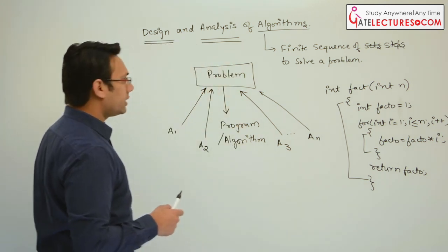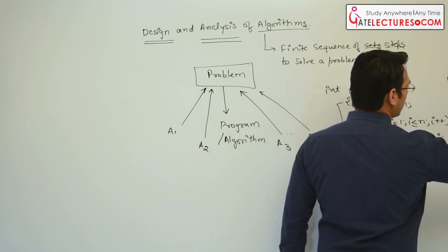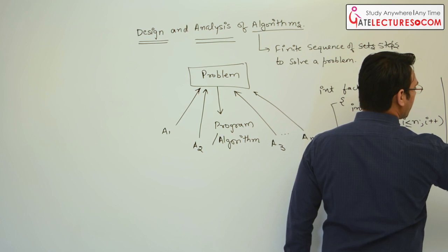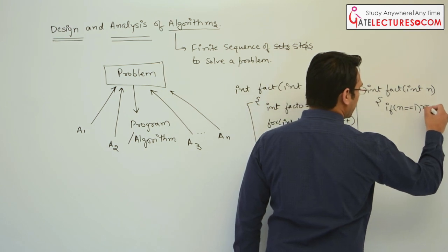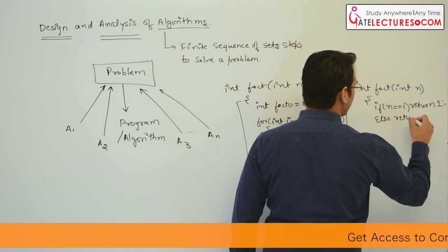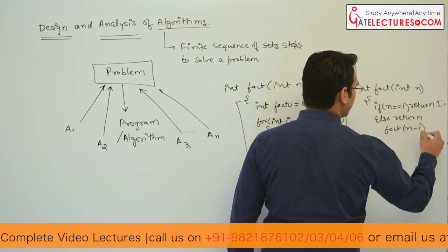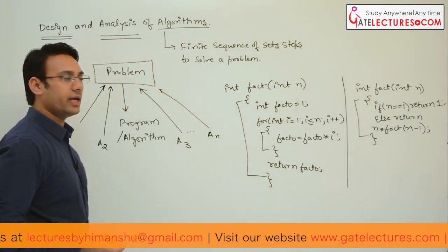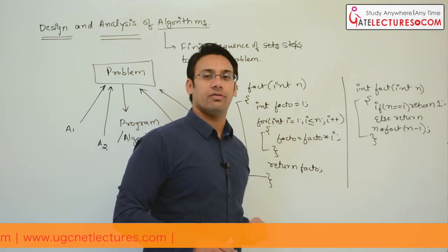We can also write a recursive program: int fact(int n) { if (n <= 1) return 1; else return fact(n-1) * n; }. So I have proposed two different solutions to solve one problem — finding the factorial of a number.